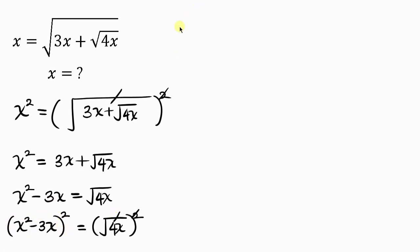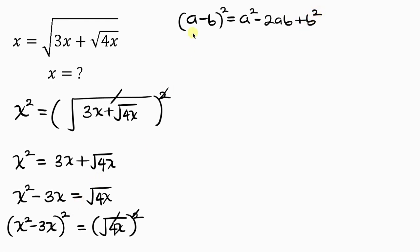We can expand the left side using the property (a - b)² = a² - 2ab + b². Comparing our expression, we see that a is in the form of x squared.